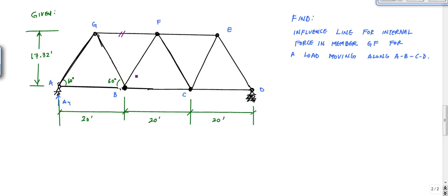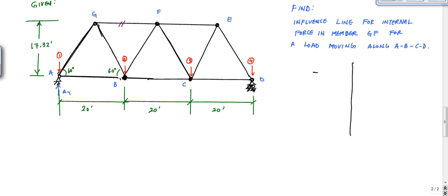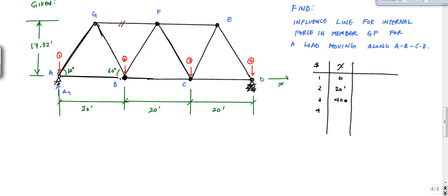The load is going to move from point A, then to point B, then to point C, then to point D. I'll call these position one, two, three, and four. In a tabulated format, if x goes this way, position one is x = 0, position two is x = 20 feet, position three is x = 40 feet, and position four is x = 60 feet. At each location, I want to find the internal force in member GF.